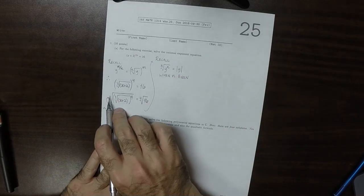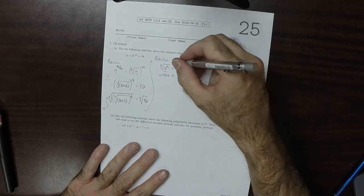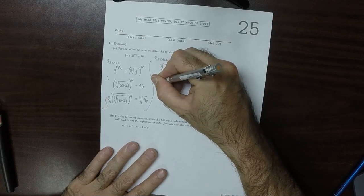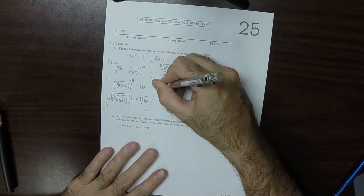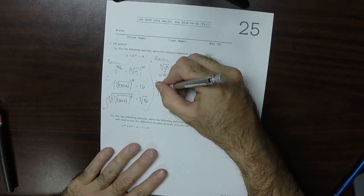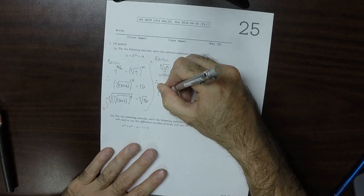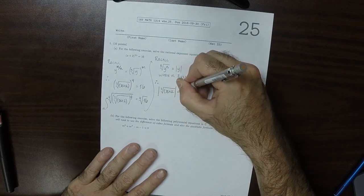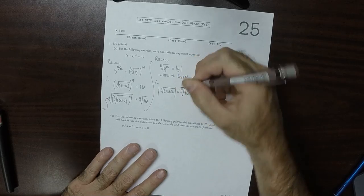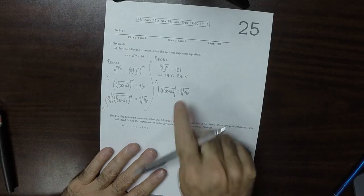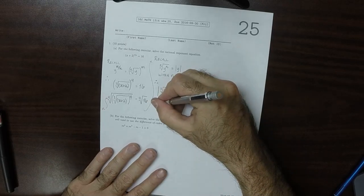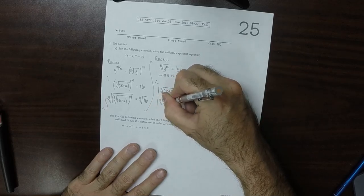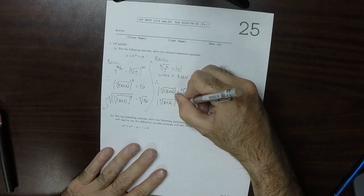So this radical and that exponent don't completely cancel. They change to absolute value. So the absolute value of the cube root of x plus 2 is the fourth root of 16. And the fourth root of 16 is 2. So absolute value of the cube root of x plus 2 is 2.